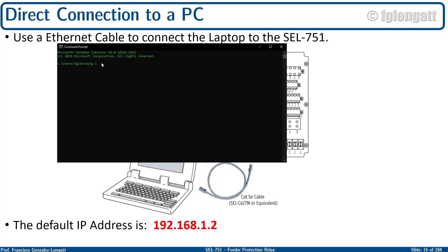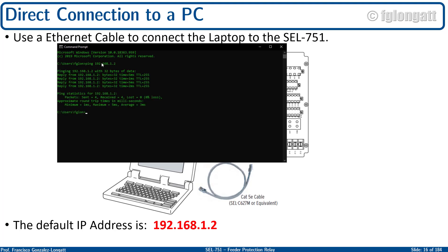I ping 192.168.1.2, and what is happening now is that my personal computer is sending a ping and there is a reply. As you can see, four packets have been sent and zero loss — that means the SEL 751 is connected to my personal computer.